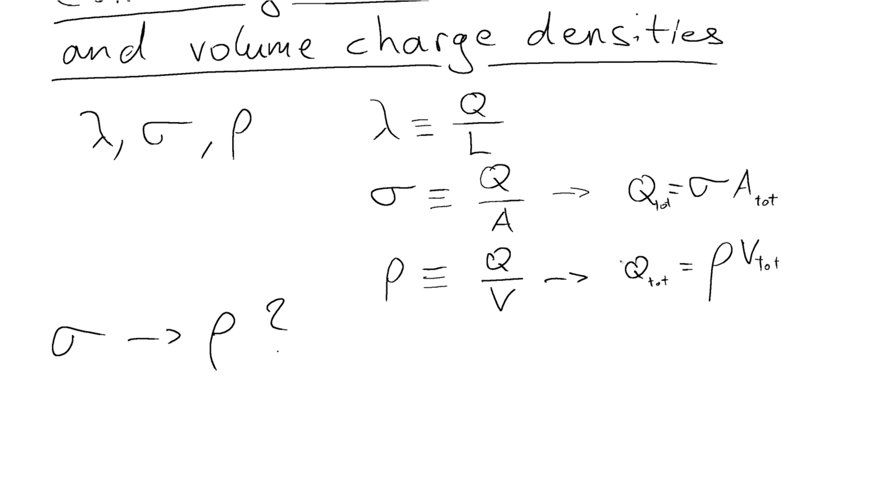Now since they're both equal, the total charge has to be the same if you're talking about the same object, that means those two things are also equal. In other words, sigma times that total area is equal to rho times the volume of the object. And that's going to be quite useful as you're doing your calculations.